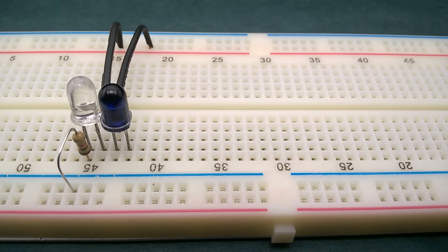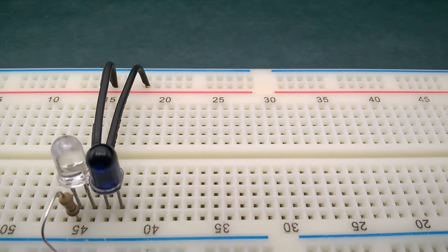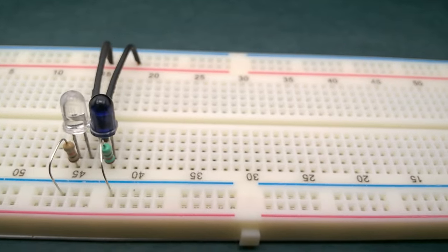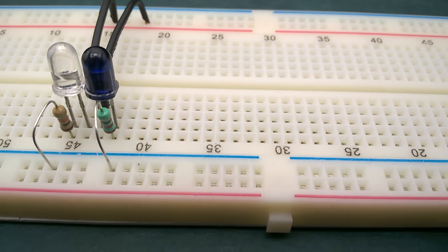We need to connect positive terminal of the infrared LED to the positive rail and its negative terminal to the negative rail via a 270 ohm resistor.